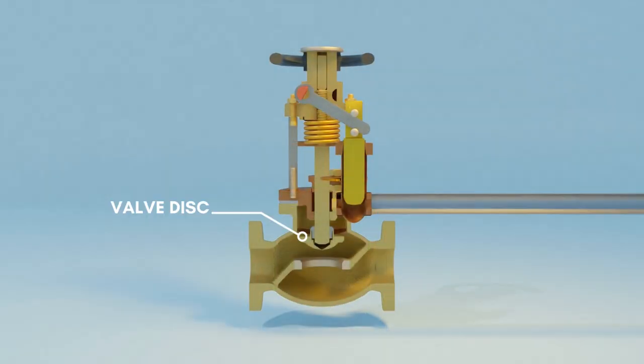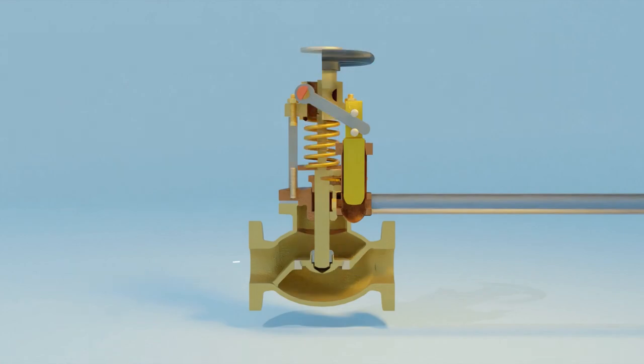This is the valve disc. It's a circular component that fits inside the valve body. When the valve is closed, the disc creates a tight seal, preventing the flow of fluid or gas.